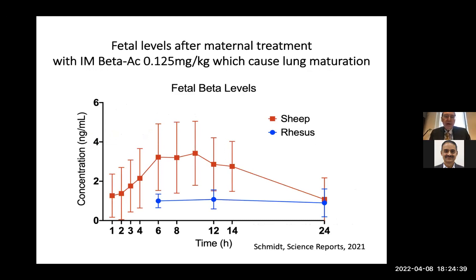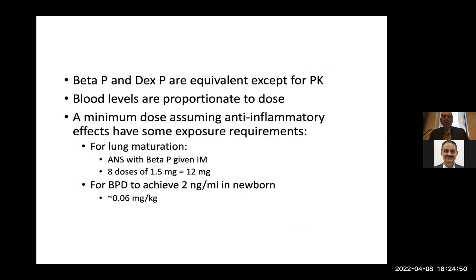Beta phosphate and dexamethasone phosphate are equivalent except for pharmacokinetics — dexamethasone clears faster, making dosing easier to control. Blood levels in monkeys and sheep are entirely proportionate to dose. For BPD, the minimum anti-inflammatory exposure requirement for the lung is approximately 2 nanograms per milliliter in the newborn, which corresponds to about 0.06 mg/kg of dexamethasone.